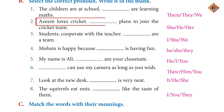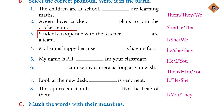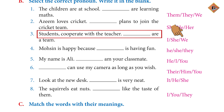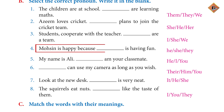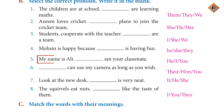Two: 'Azeem loves cricket. ___ plans to join the cricket team.' Answer: He plans to join. Three: 'Students cooperate with the teacher. ___ are a team.' Answer: We are a team. Four: 'Mohsen is happy because ___ is having fun.' Answer: Because he is having fun.